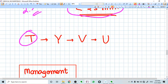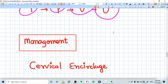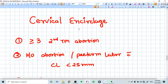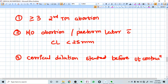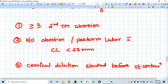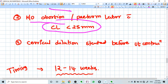What is the management? The only management is cervical cerclage. Cervical cerclage is offered to very high-risk women who can have incompetent cervix and preterm delivery. Prophylactic cerclage can be done, for example, for more than three second trimester abortions, history of preterm labor or abortion with cervical length less than 25mm, or cervical dilatation started before uterine contraction.